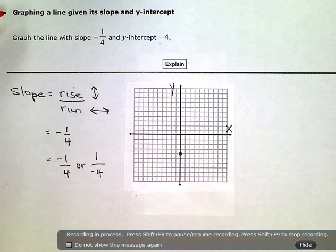Graphing a line given its slope and y-intercept. Graph the line with slope negative one-fourth and y-intercept negative four.